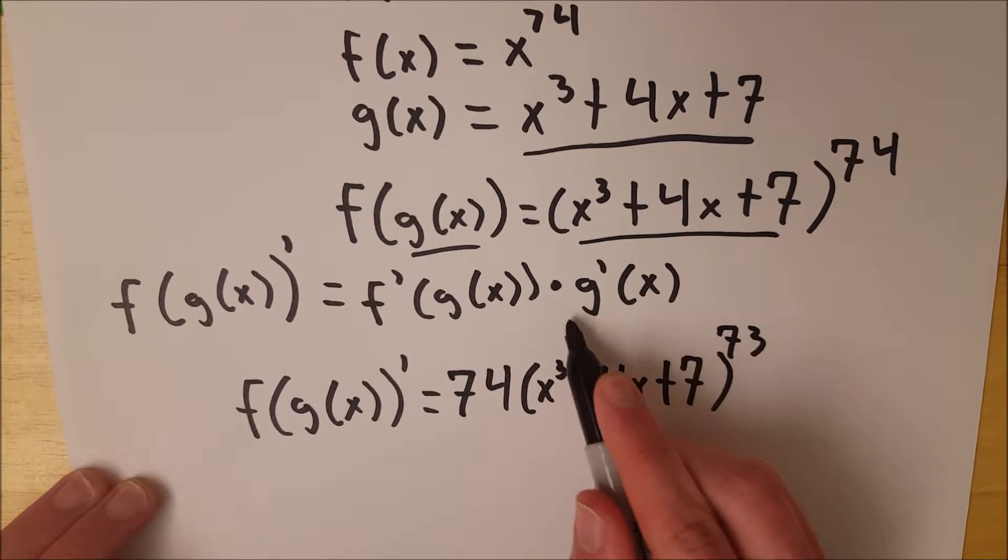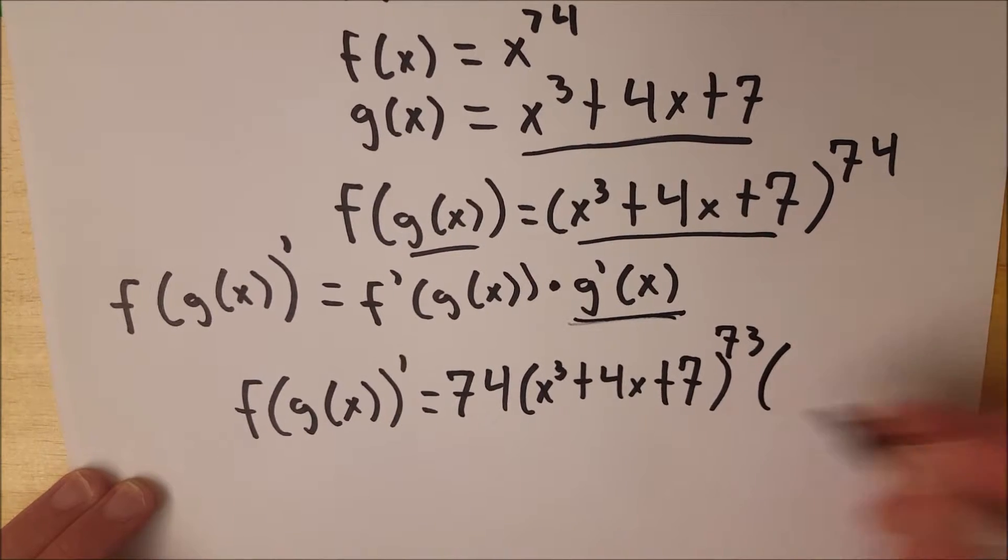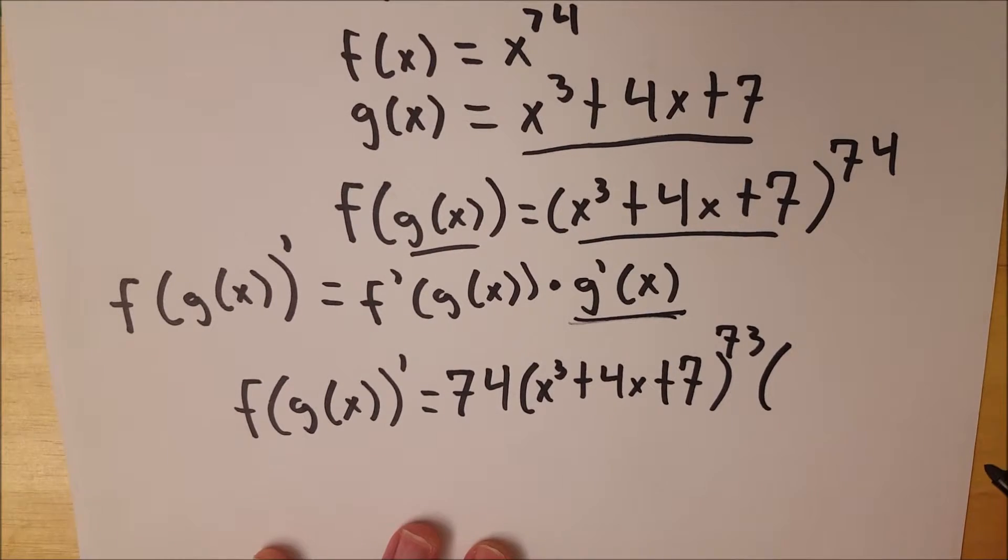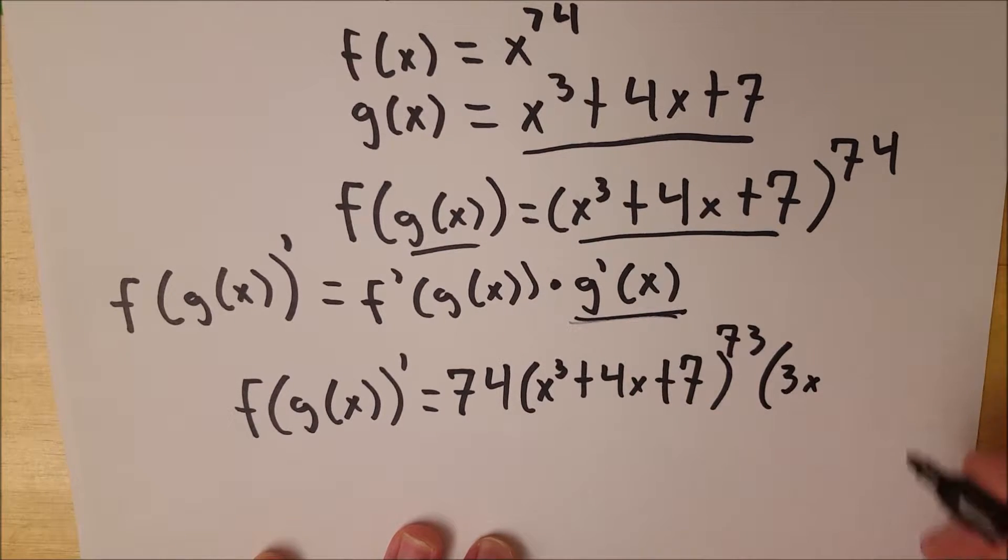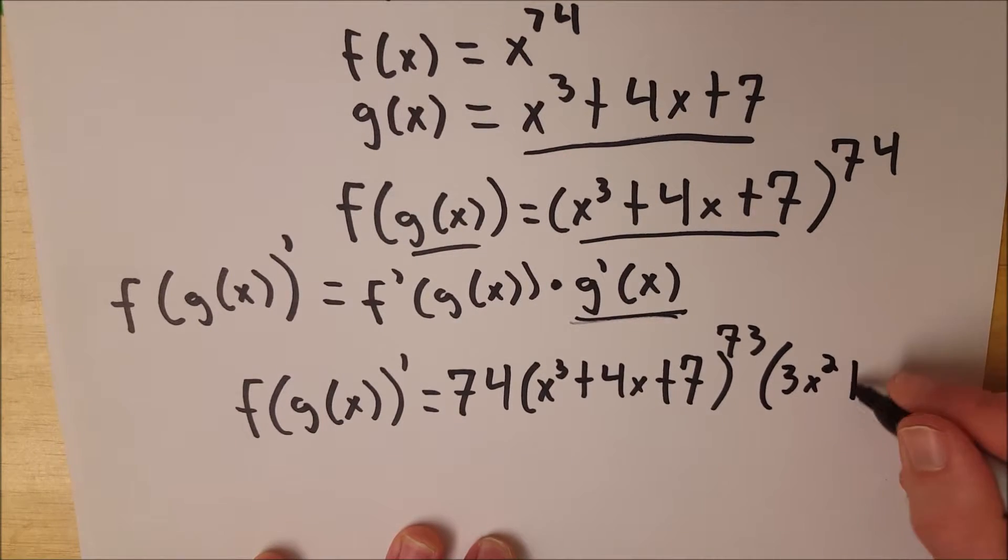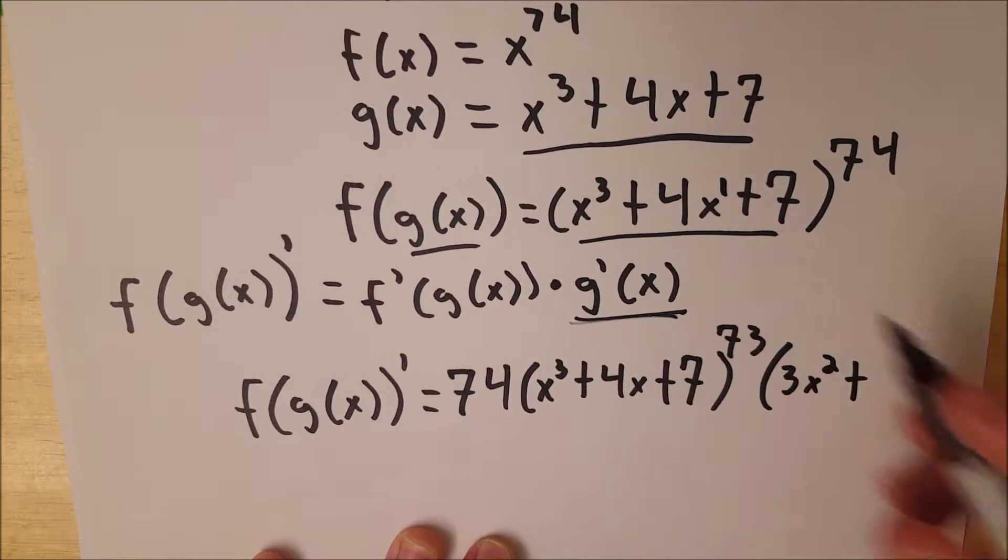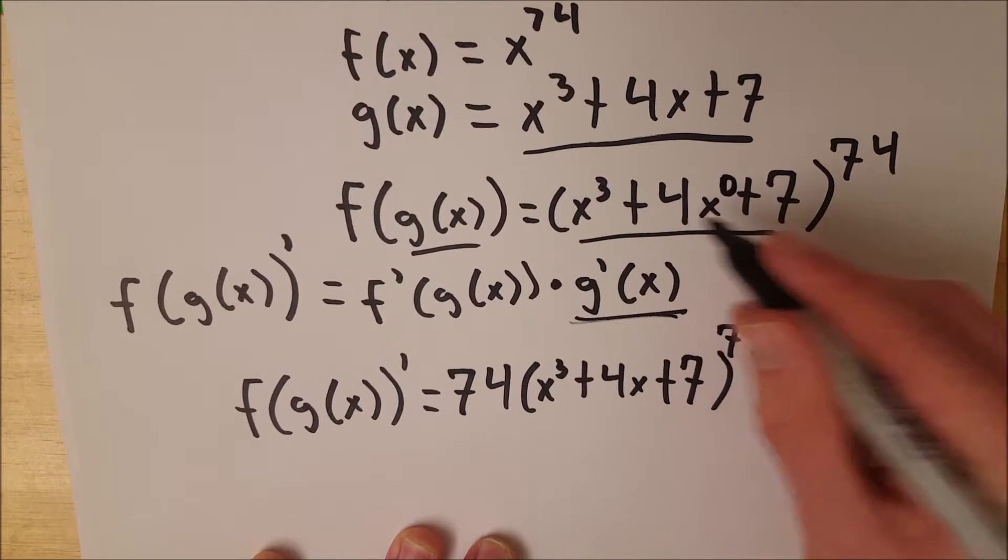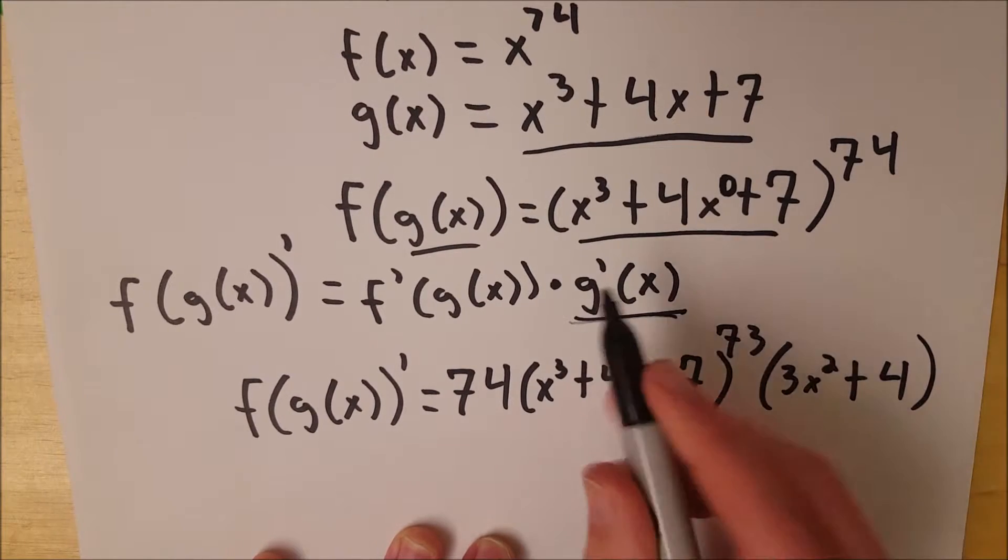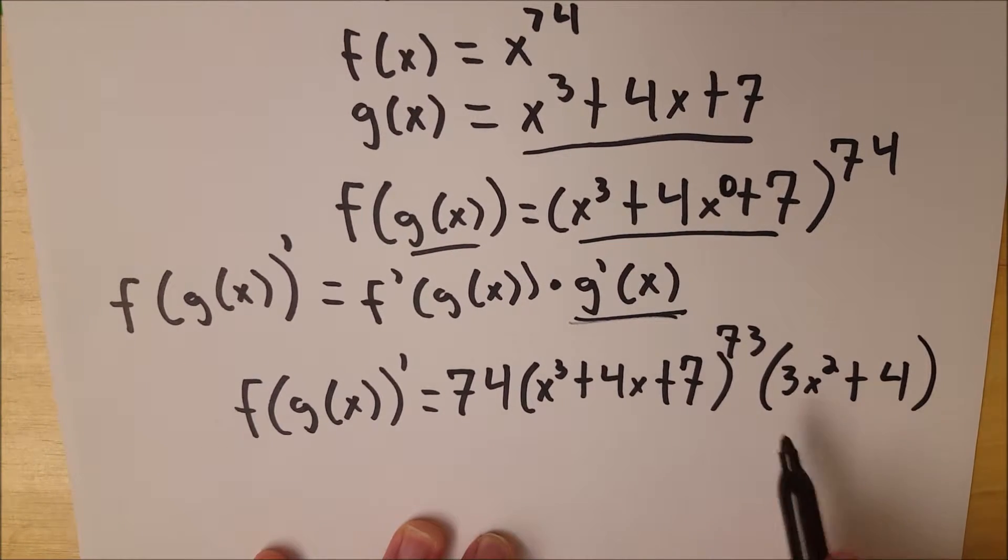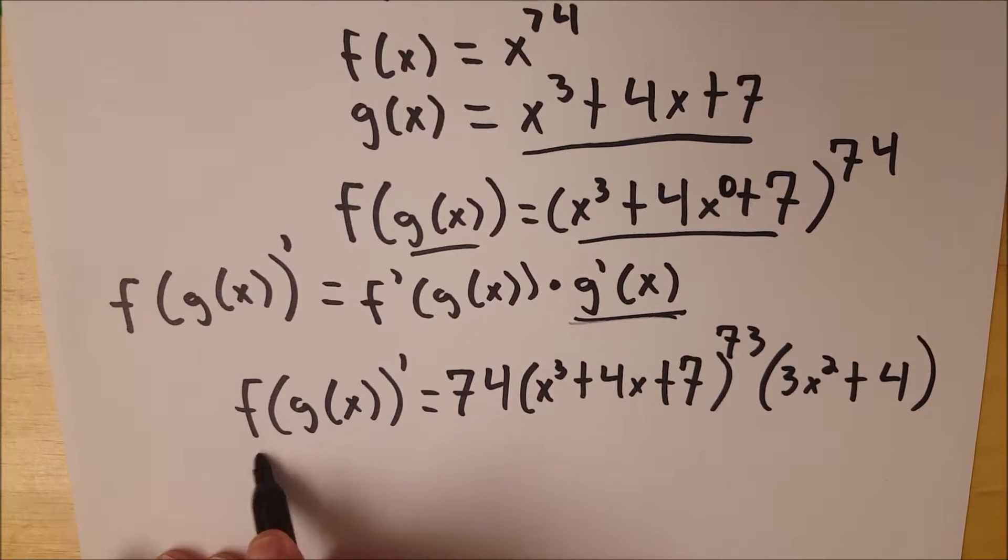And now we're going to multiply this by g prime of x, so that's the derivative of this inside function. If you're familiar with deriving polynomials it's pretty easy. We'll just bring this 3 down in front to give us 3x, drop the exponent by one, that's 3x squared, plus this x has an exponent of one, drop it by one, that makes it x to the zero which is just one, multiply that by four is four, the seven becomes a zero. And remember we're only taking the derivative of the inside function, so this is not raised to any power. And this is your derivative.